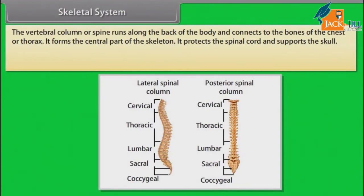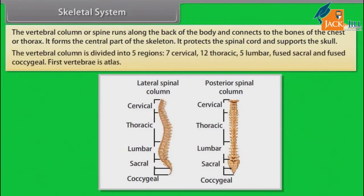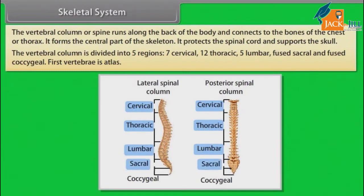The vertebral column or spine runs along the back of the body and connects to the bones of the chest or thorax. It forms the central part of the skeleton, protects the spinal cord, and supports the skull. The vertebral column is divided into 5 regions: 7 cervical, 12 thoracic, 5 lumbar, fused sacral, and fused coccygeal vertebrae. The first vertebra is the atlas.